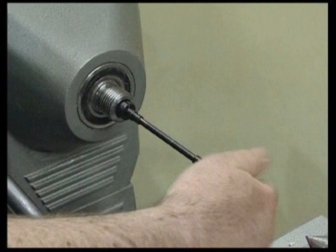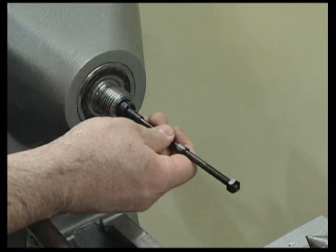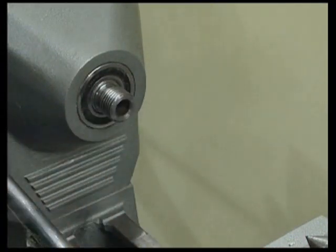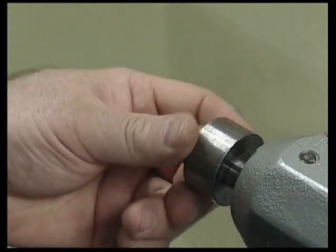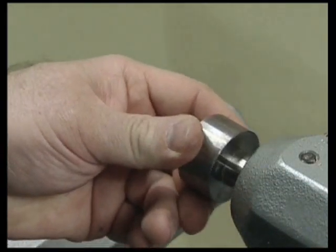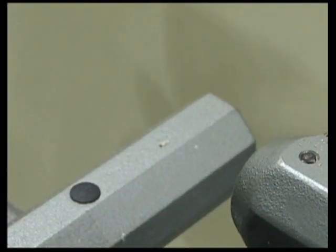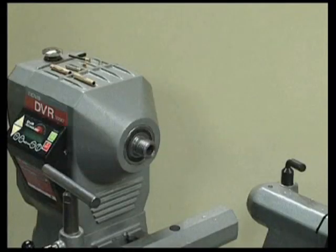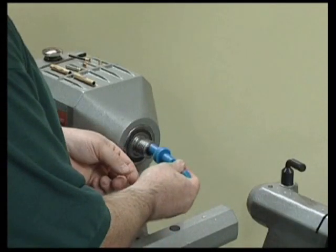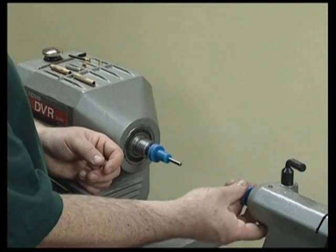Assembly of the pen is done on the lathe. We remove the mandrel and revolving centre from the lathe. We replace this with a pen assembler. This is made from nylon and when assembling the pen is soft enough as to not mark the pen.